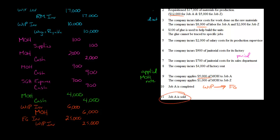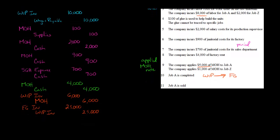Now we sell Job A. We have to take it out of finished goods inventory since we've actually sold it. We recognize cost of goods sold — debit cost of goods sold for $25,000 and credit finished goods inventory for $25,000.